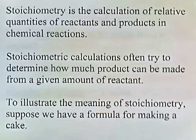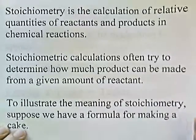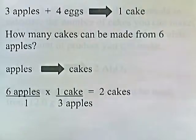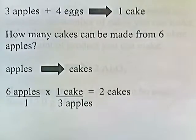To illustrate the meaning of stoichiometry, suppose we have a formula for making a cake. We have: three apples plus four eggs make one cake. That's our formula.